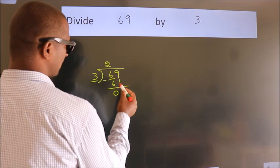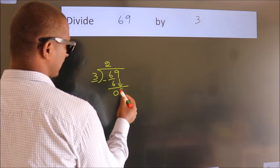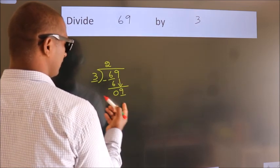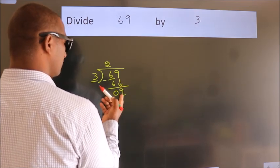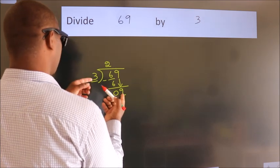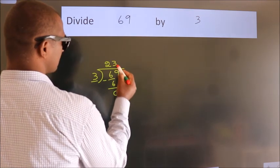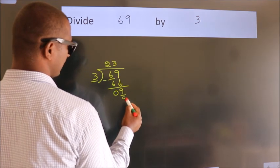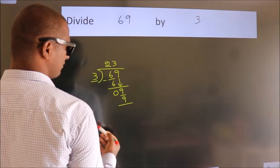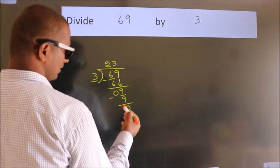After this, bring down the beside number. So, 9 comes down — we have 9. When do we get 9? In the 3 times table, 3 threes are 9. Now we subtract, we get 0.